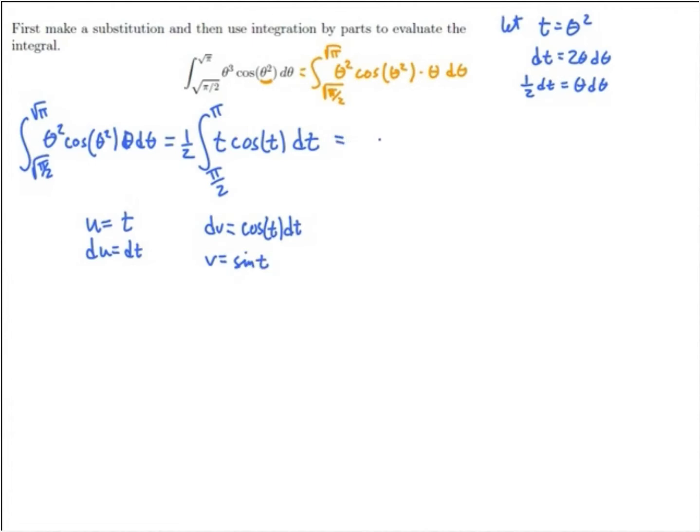So this definite integral becomes one-half times uv, so t sine of t, from pi over 2 to pi, minus the integral from pi over 2 to pi of v du, sine of t dt.